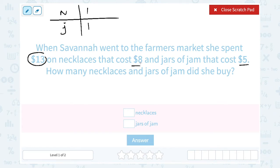If she bought one necklace for $8 each, that would be $8. And one jar of jam for $5 each, that would be $5.